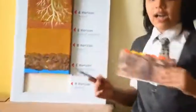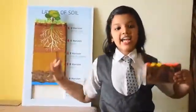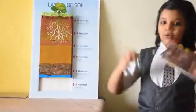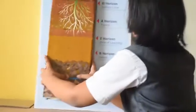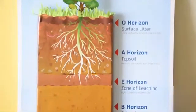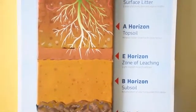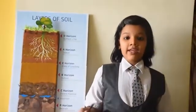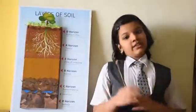The last and bottom layer is the R horizon. It is a compacted and cemented layer. Different types of rocks such as granite, basalt, and limestone are found here. I hope you liked my project and my presentation. Thank you.